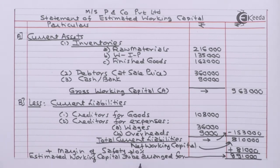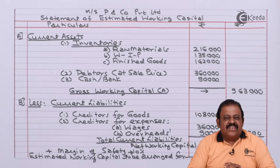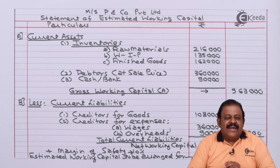Estimated working capital to be arranged = 8,10,000 + 81,000 = rupees 8,91,000. In this question we have learned how to calculate margin of safety and present the estimated net working capital.